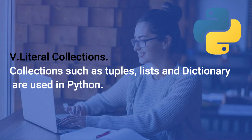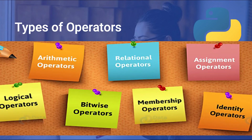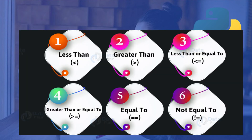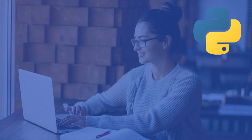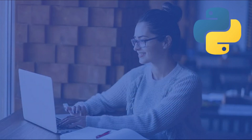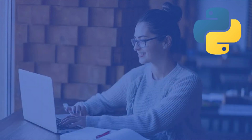The next topic is Python operators. Just like C++, Python has the same operators: arithmetic operators, comparison operators, assignment operators, logical operators, bitwise operators, membership operators, and identity operators. Comparison operators include equal to, not equal to, greater than or equal to, less than or equal to. Assignment operators include equals, plus-equals, minus-equals, star-equals. Bitwise operators perform bit-by-bit operations: binary AND, binary OR, binary XOR, negation, left shift, right shift.